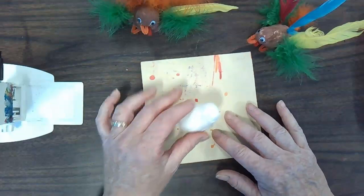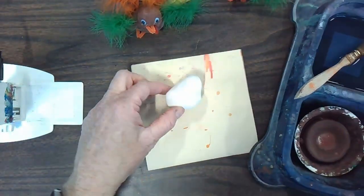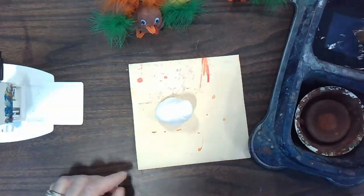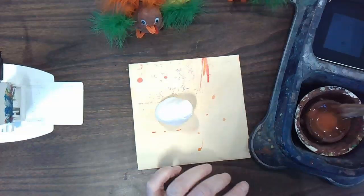This paper is just to protect the table. And our first job is to paint our turkey's body with some brown paint. We want this to dry so we don't want to use too much water.